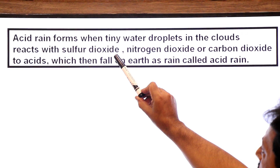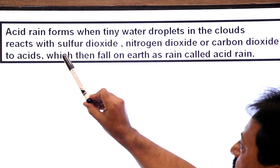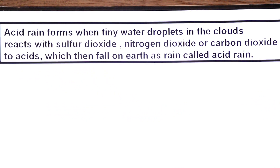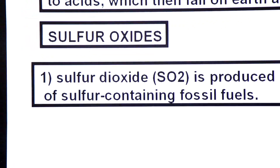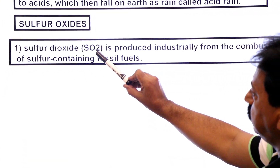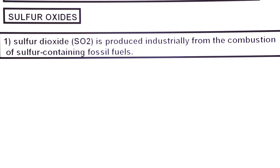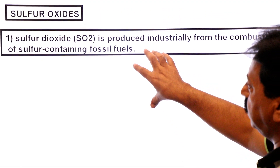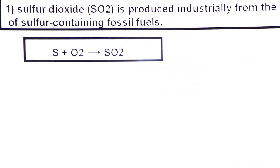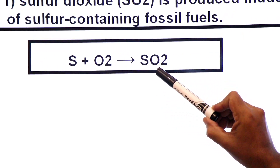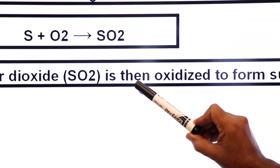Acid rain forms when tiny water droplets in the clouds react with sulfur dioxide, nitrogen dioxide, or carbon dioxide to form acids, which then fall on earth as rain called acid rain. Now dear students, we will discuss sulfur oxides. SO2 is produced industrially from the combustion of sulfur-containing fossil fuels. From such fossil fuels that contain sulfur, when they burn, sulfur dioxide is released. Sulfur combines with molecular oxygen to form sulfur dioxide. Then sulfur dioxide is oxidized.